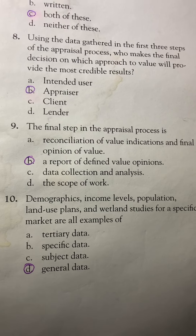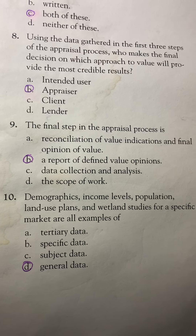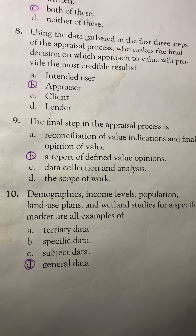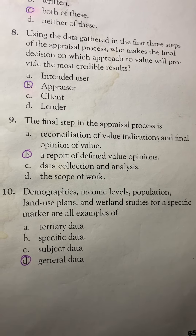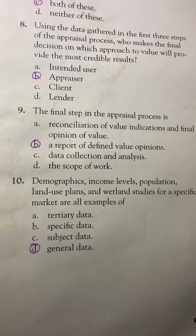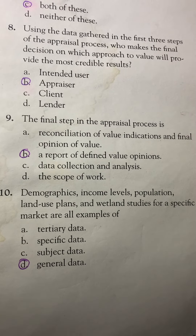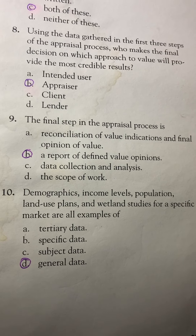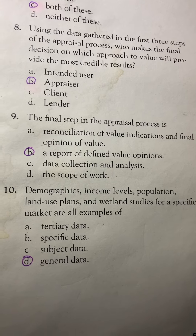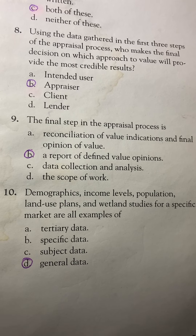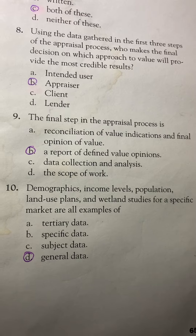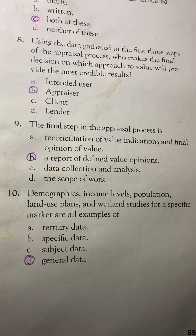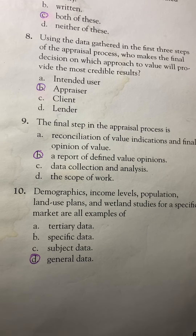Number 10. Demographics, income levels, population, land use plans, and wetland studies for a specific market are all examples of: A. Tertiary data, B. Specific data, C. Subject data, or D. General data. The answer is D: General data.